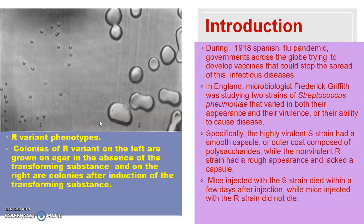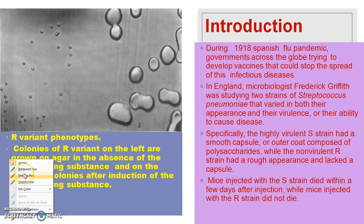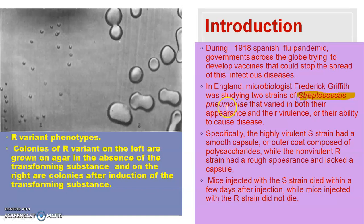During 1918, there was a pandemic called the Spanish flu. Governments, industries, and scientists were trying to develop vaccines to stop the spread of this pandemic. At the same time, in England, scientists were studying a bacterium called Streptococcus pneumoniae, also called Diplococcus pneumoniae, which is the causative agent of pneumonia.